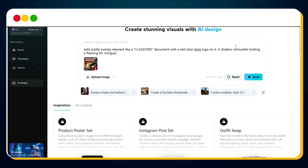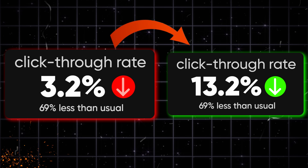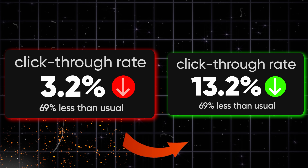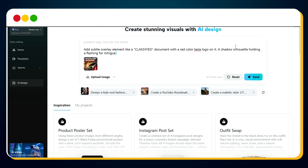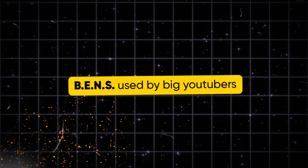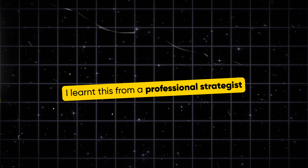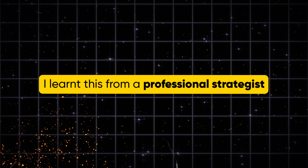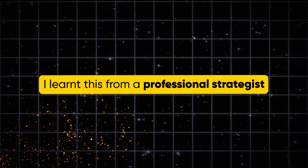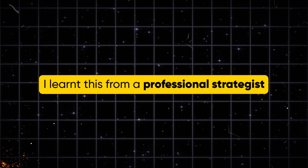But wait — everything you've learned so far is just one part of the system. If you really want to hit that 13% CTR mark, you need to understand the magical formula that big YouTubers secretly use. Have you ever heard about the BENS Principle? This is the exact formula used by big creators to make their videos go viral — learned from a professional YouTube strategist who works with top performing channels.